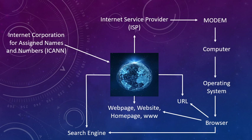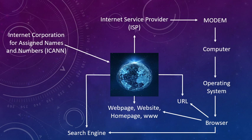Now, in order to access any website you need to know the name or the address of that website. This address of the website is provided by a corporation named ICANN — that means Internet Corporation for Assigned Names and Numbers. This is the corporation that provides you different types of website addresses. If the address of the website is reserved, then you can access that particular website.